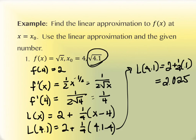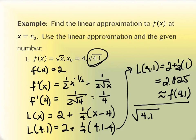So 2.025 is approximately f(4.1). If you want to see how close the approximation is, you can use your calculator to find the square root of 4.1 with more decimals — it gives approximately 2.02484. As you can see, they're pretty close. The first two decimal places are identical, and at the thousandths place there's only a rounding difference. They're fairly accurate.